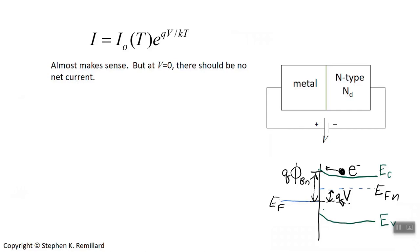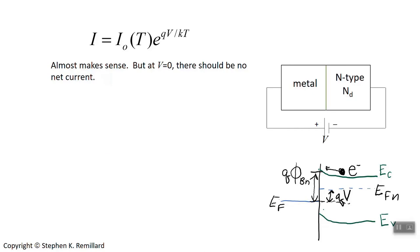If you look at this expression for current, you realize it can't be the whole story. When voltage V is zero, the current should be zero — you can't get current without voltage — yet the expression gives I = I₀. To fix this, subtract I₀ from the expression: that is, subtract the current the expression predicts when V equals zero. This would certainly work, and in fact it is the right thing to do.